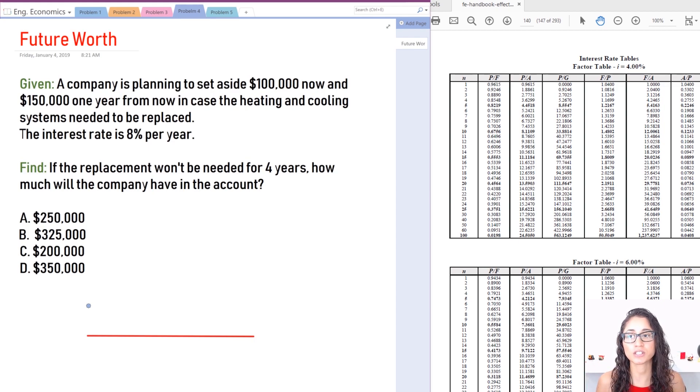Okay, so the question is: a company is planning to set aside $100,000 today and $150,000 a year from now. This is just in case their heating and cooling system breaks down and needs to be replaced. They deposited this for an interest rate of 8% per year.